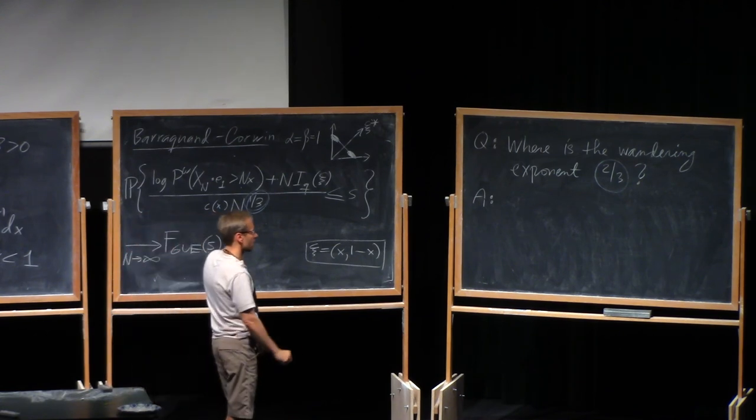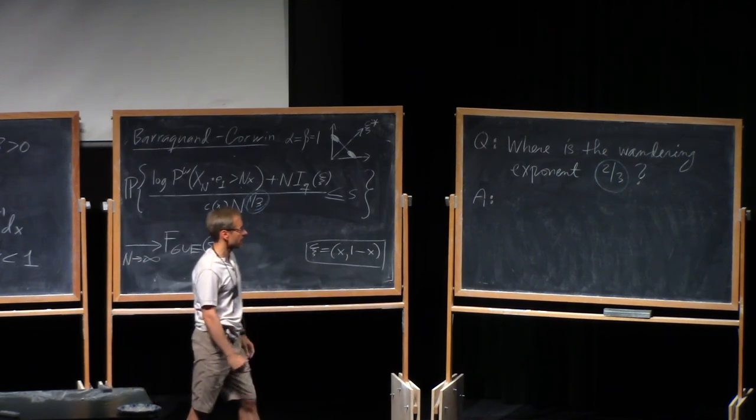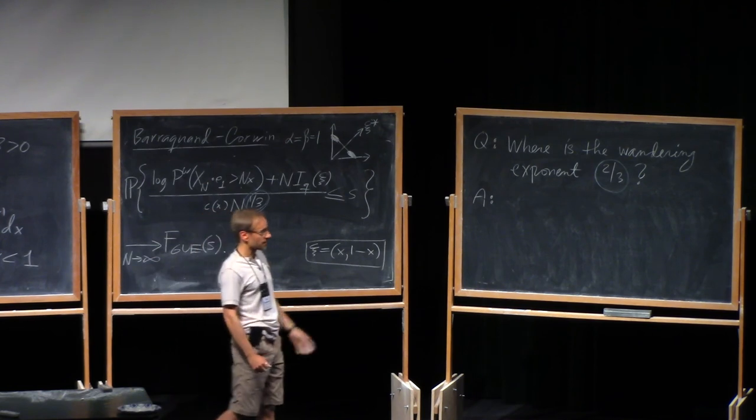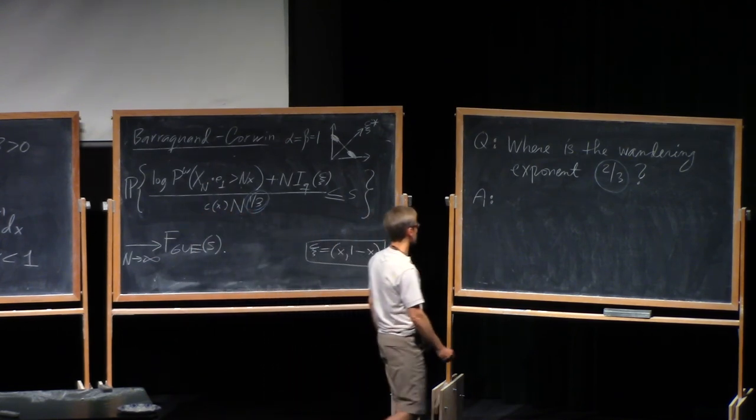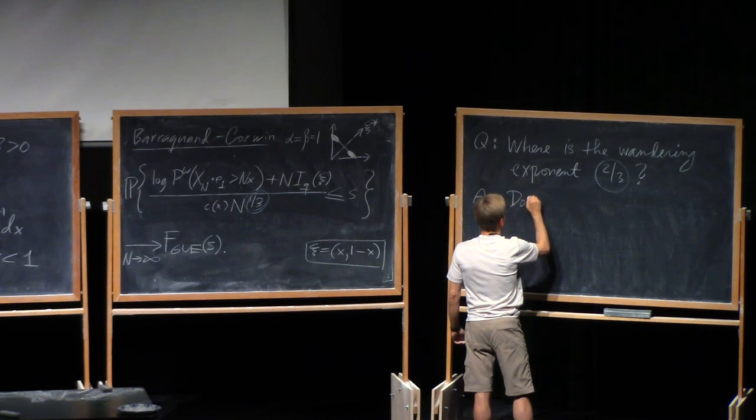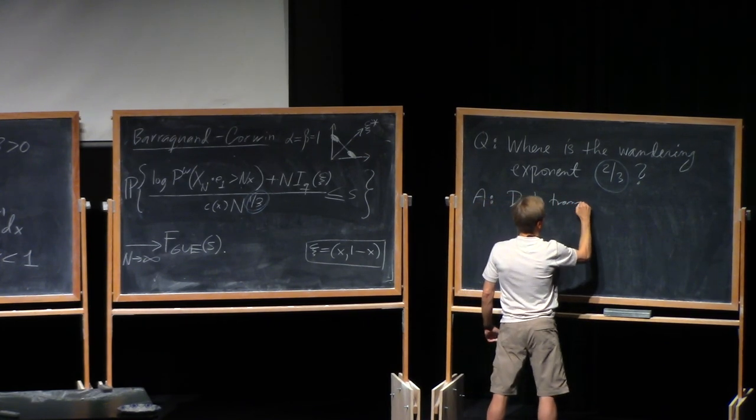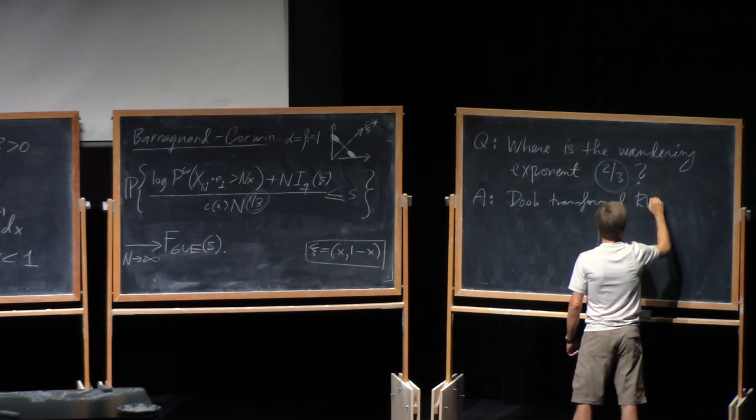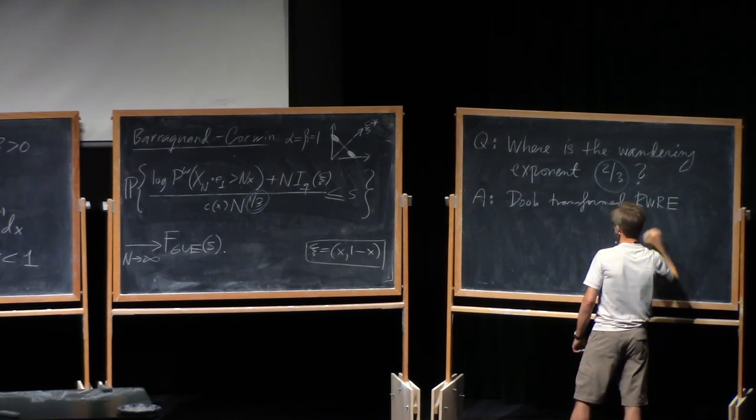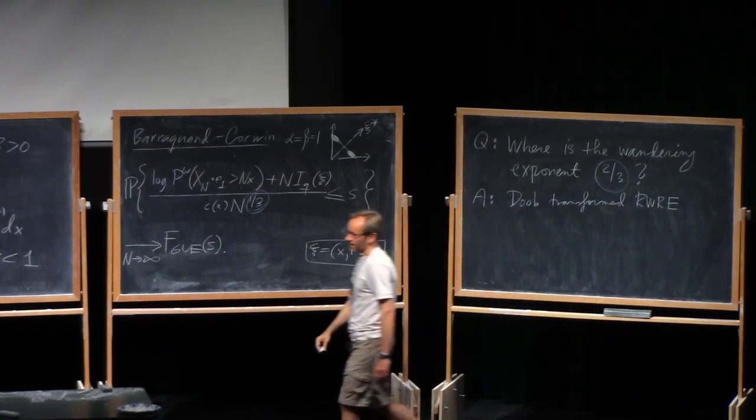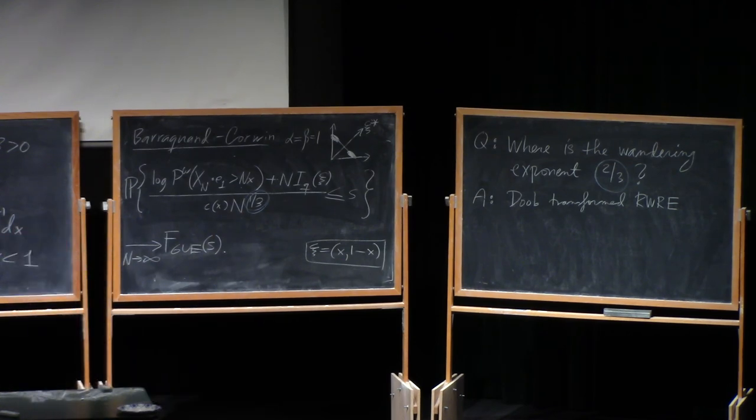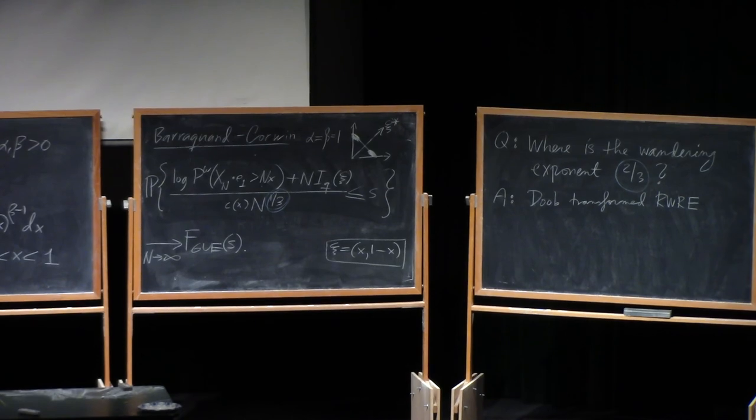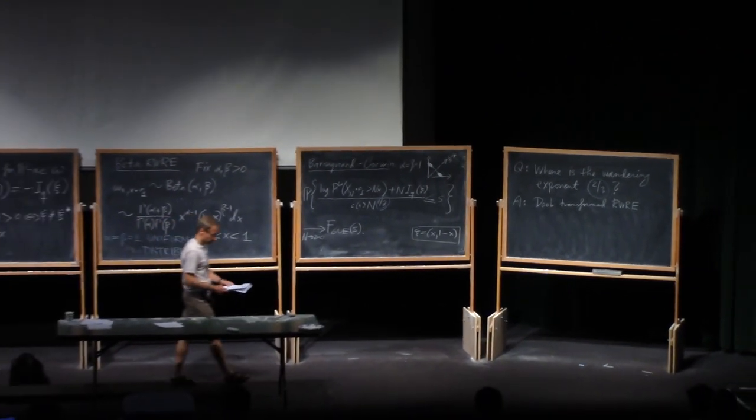So, since the walk itself in the IID environment behaves just like classical random walk, that's not the source of a 2 thirds wandering exponent. But then it was the Doob transformed thing that exhibits the 2 thirds behavior. All right. So, let me now then turn to describing our results in three parts.